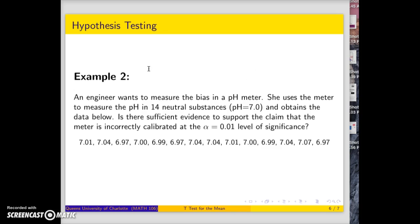Here's another example where you're given raw data instead of summary data. We have 14 neutral substances and are looking at the values that the pH meter gives.